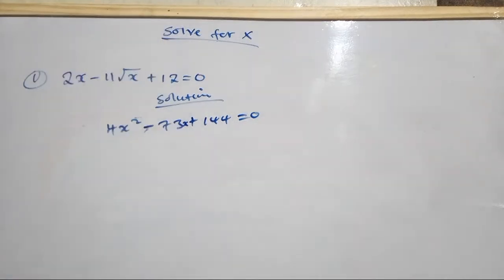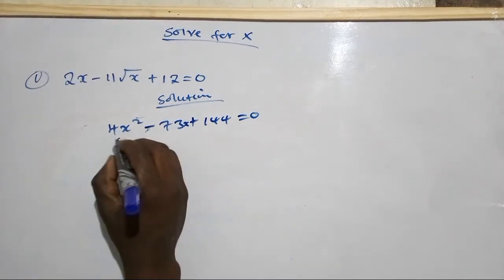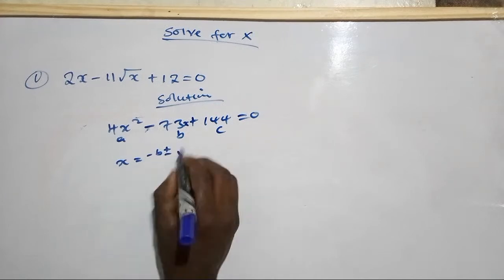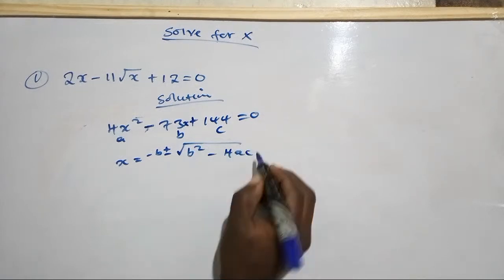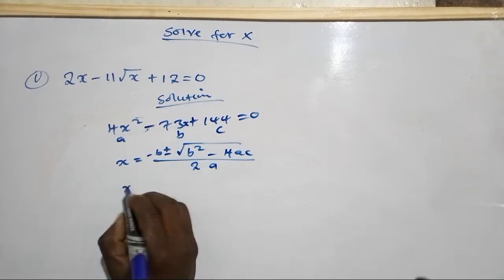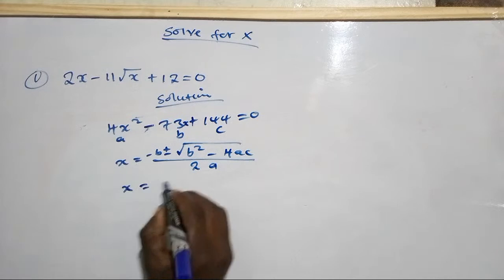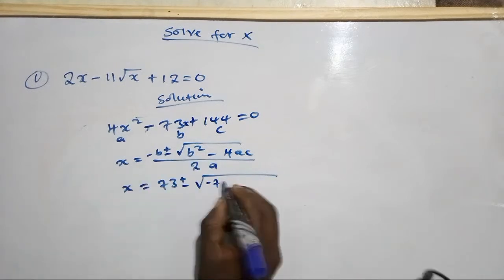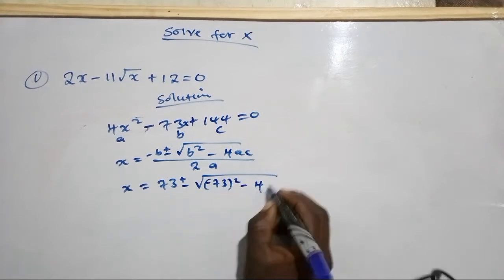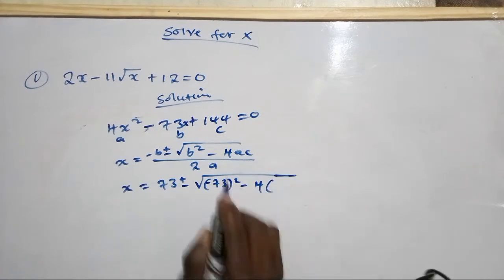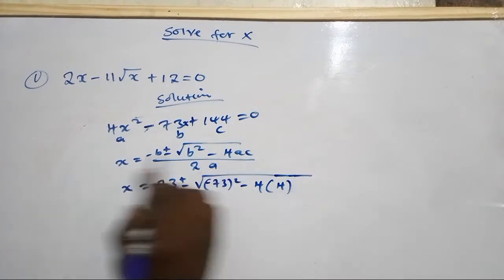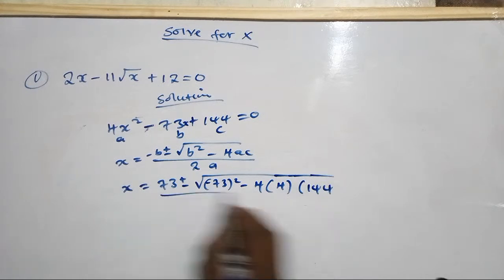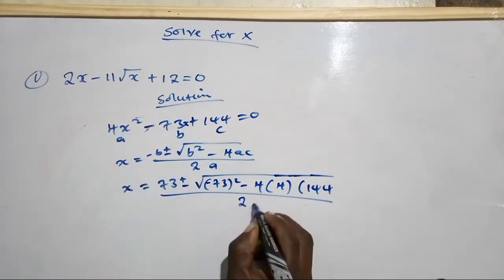We can solve this quadratic equation using the formula. Here a, b, c are identified. We use x equals minus b plus or minus square root of b squared minus 4ac, divided by 2a. Substituting: b is negative 73, a is 4, and c is 144. So we divide by 2 times 4, which is 8.